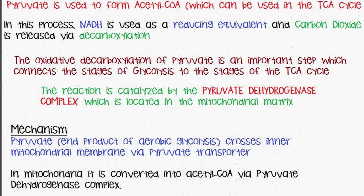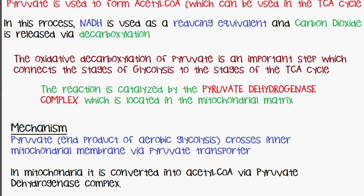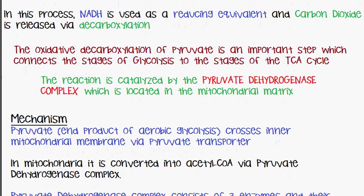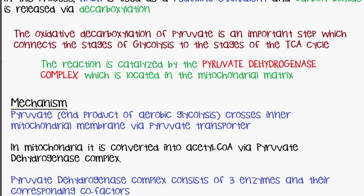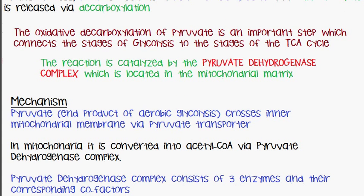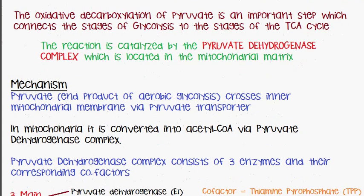Since glycolysis occurs in the cytoplasm, the pyruvate has to be transported into the mitochondrial matrix where the pyruvate dehydrogenase complex is. The pyruvate crosses the inner mitochondrial membrane via a pyruvate transporter, and once in the mitochondria it is converted into acetyl-CoA via the pyruvate dehydrogenase complex.